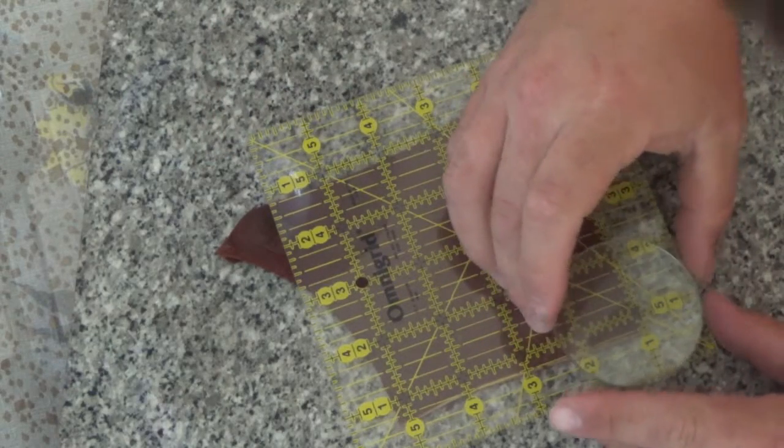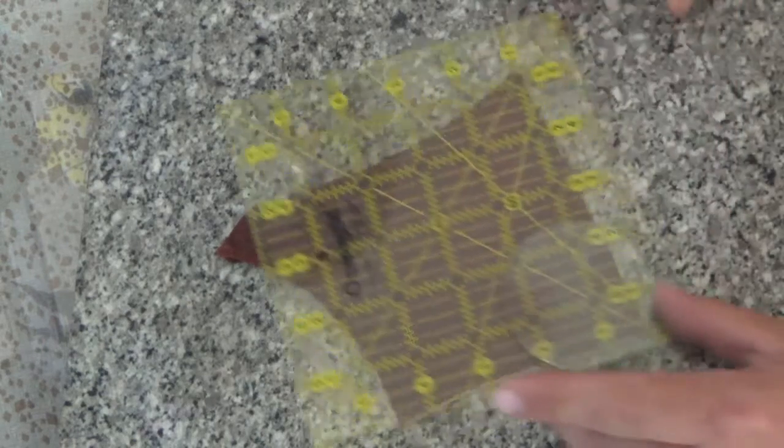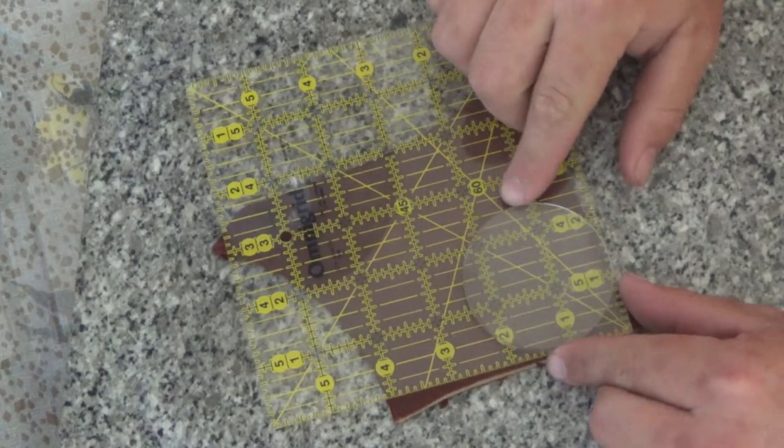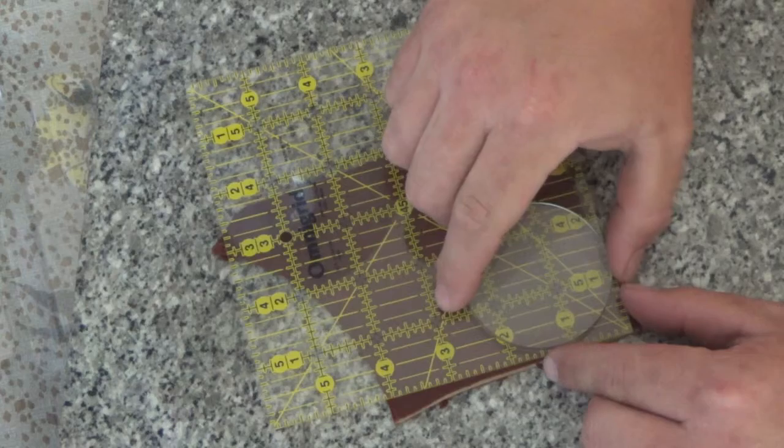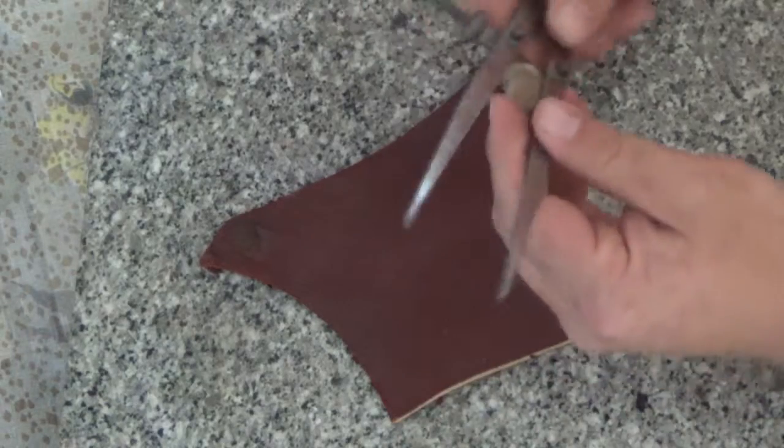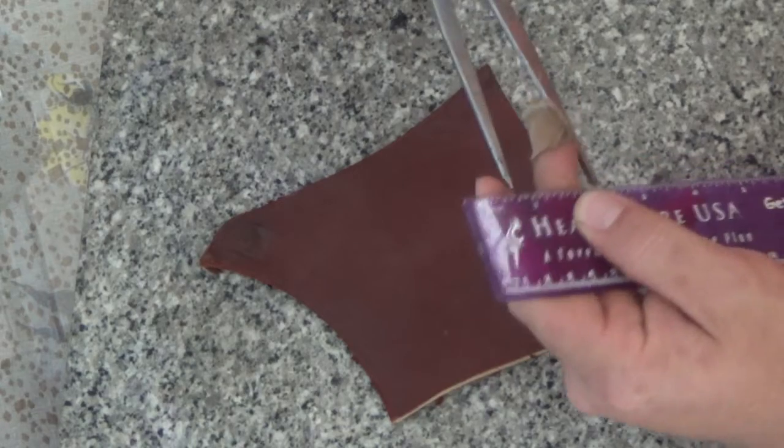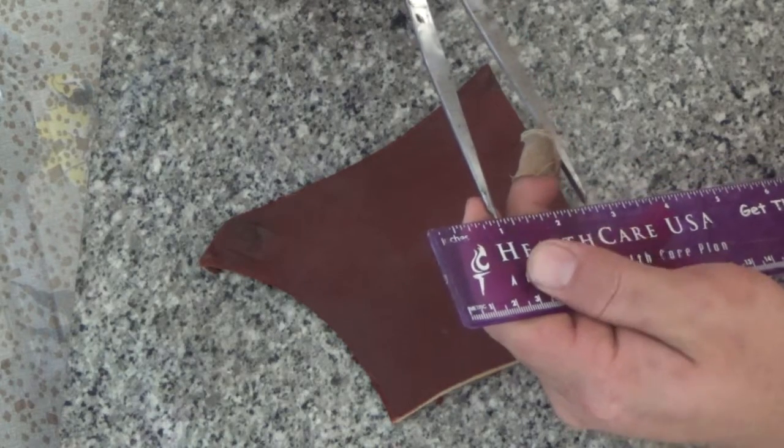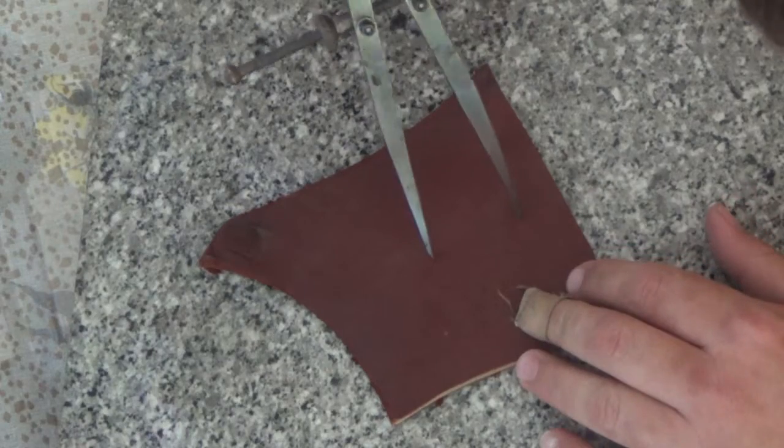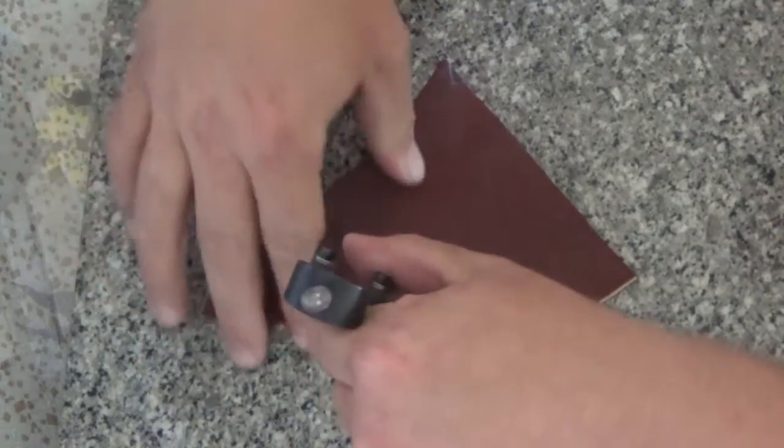The first thing you do is measure how big your magnifying glass is. Mine is about two and a half inches. You adjust your calipers to be slightly bigger than your magnifying glass. This worked out being about a three and one quarter inch circle. Then, you scribe a circle on the leather.